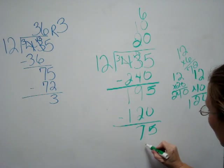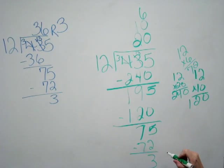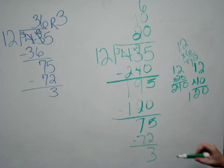I'm going to add my 6 up there. I'm going to subtract down here, and it gives me 3. I have a remainder of 3. I cannot take 12 and put 3 in there anymore.